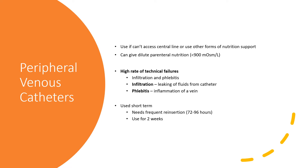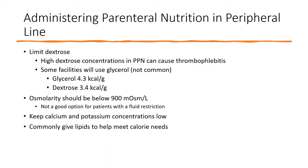PPN is diluted because the osmolarity needs to be less than 900 milliosmoles per liter. There are high rates of technical failures with PPN, the most common being leaking of fluids from the catheter or inflammation of the vein. Therefore, PPN is usually used short-term and needs to be reinserted frequently. The amount of dextrose you can give in a PPN is often limited because high concentrations of dextrose can cause thrombophlebitis.